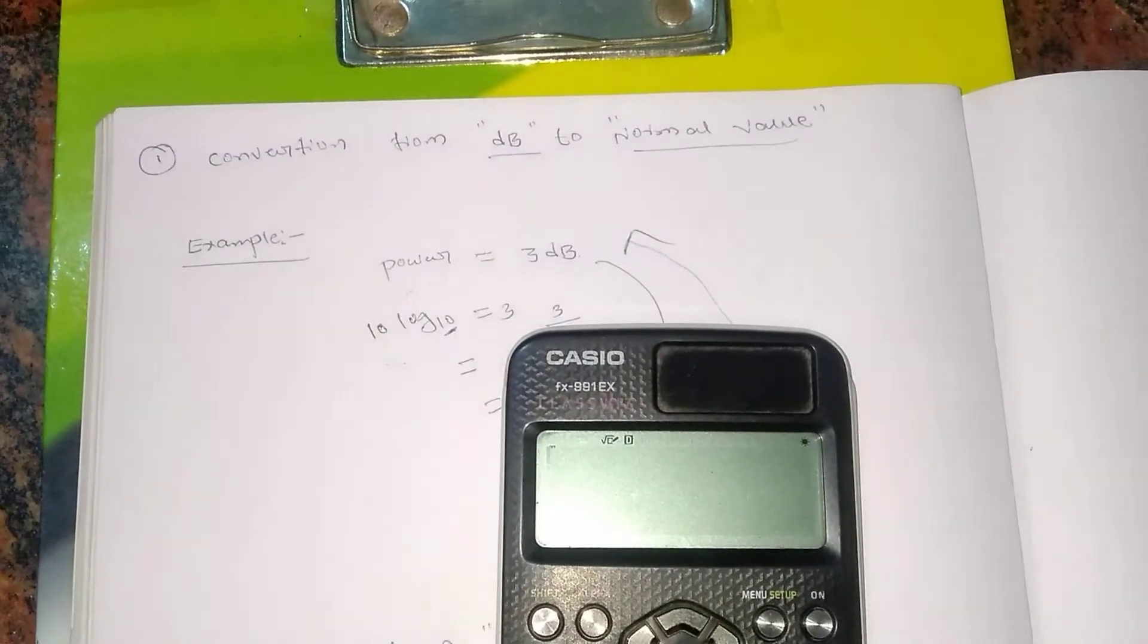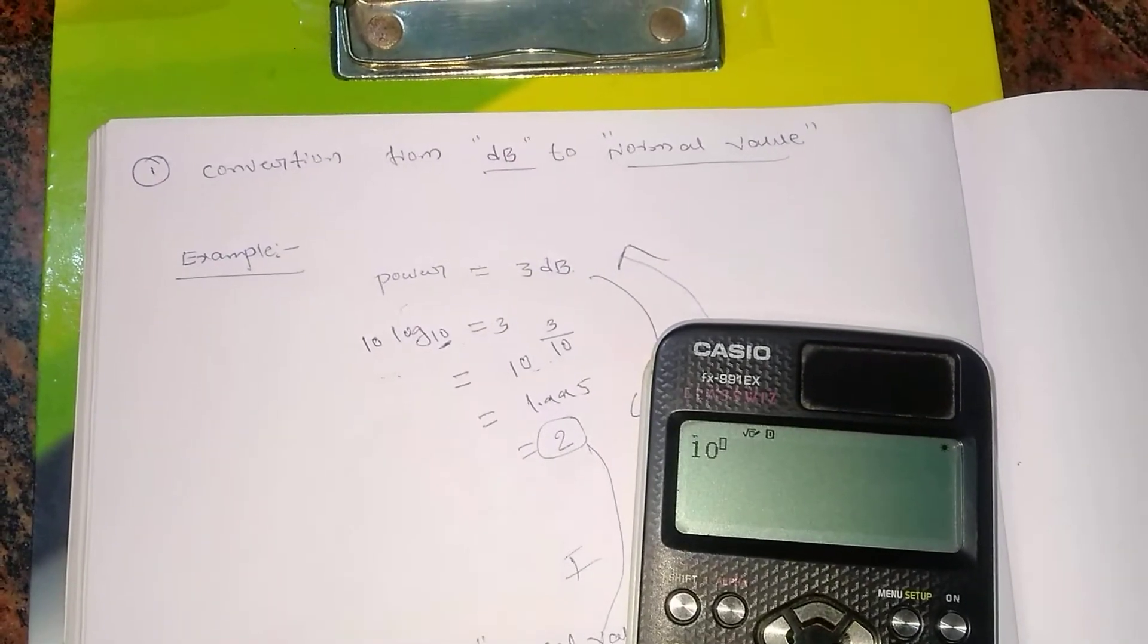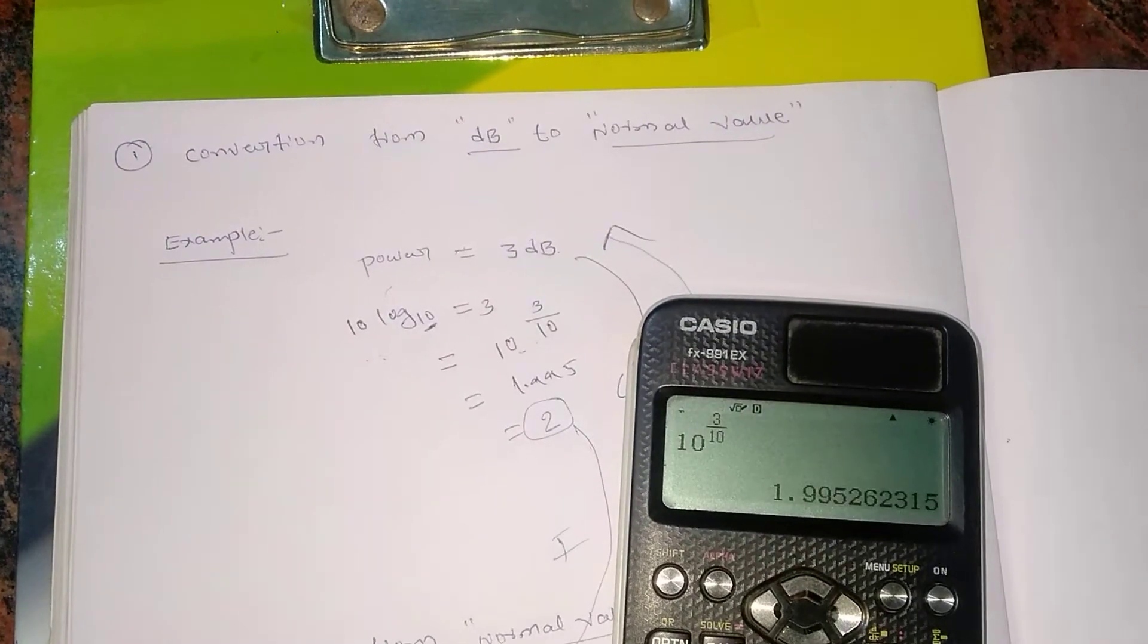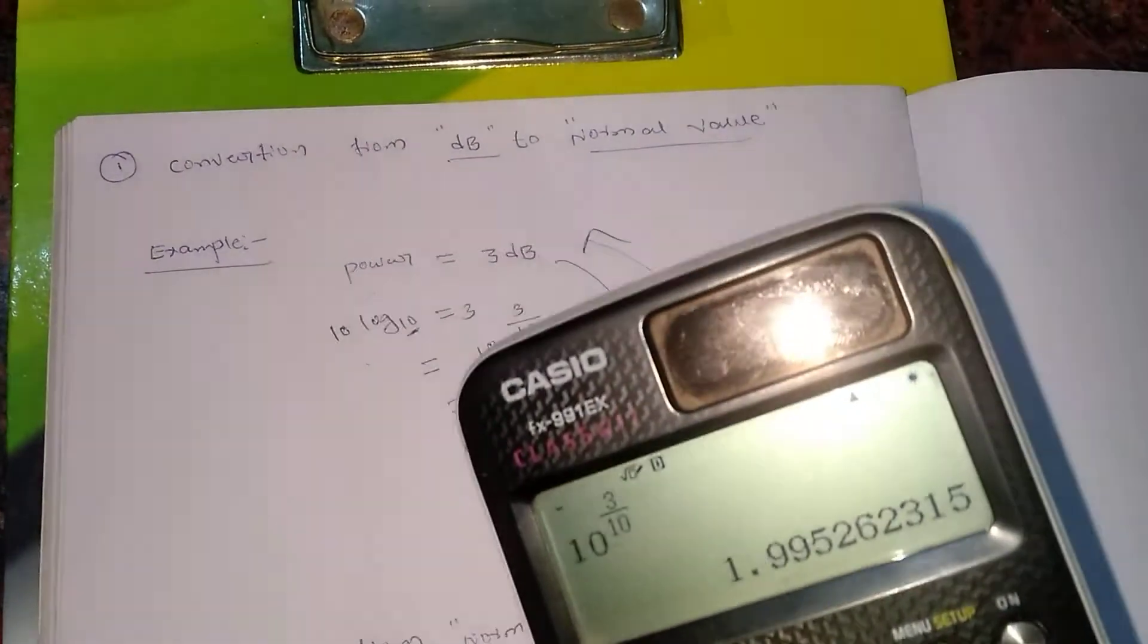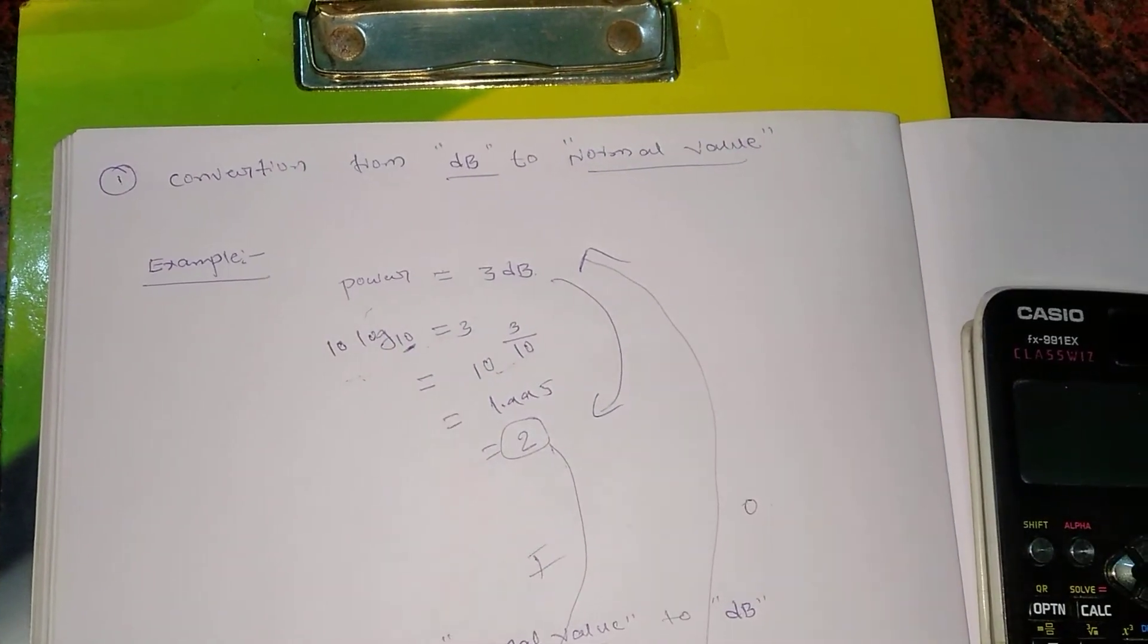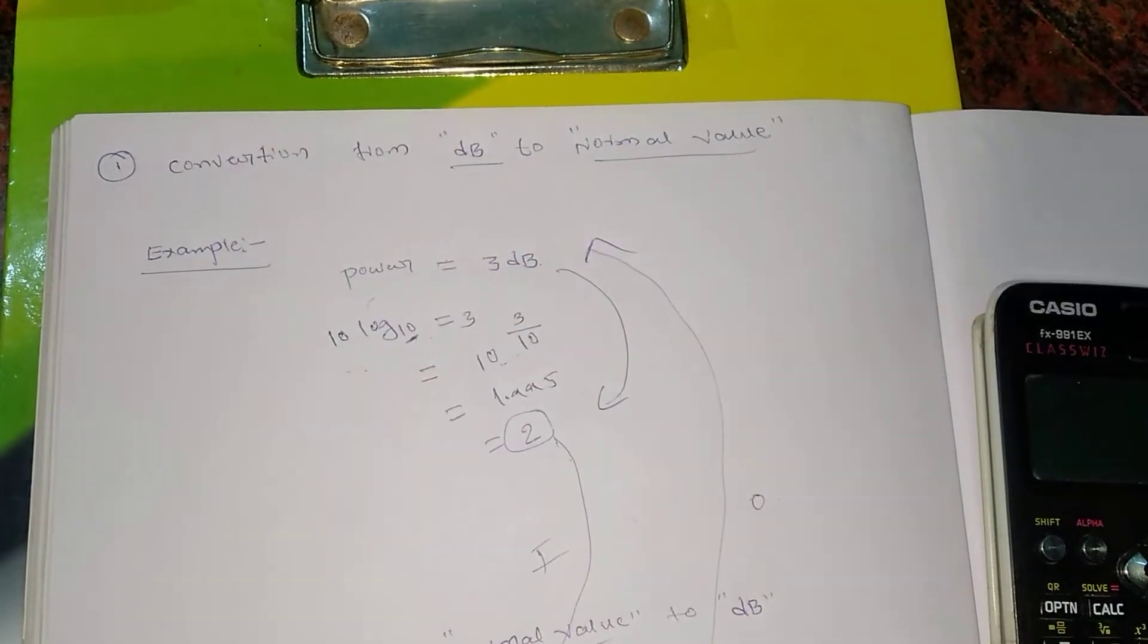After you do this, you'll be getting 1.995. Let me just show you in the calculator as well. So 10 to the power 3 by 10 - when I do it you can see it's 1.995, and I can round it up to 2 here.